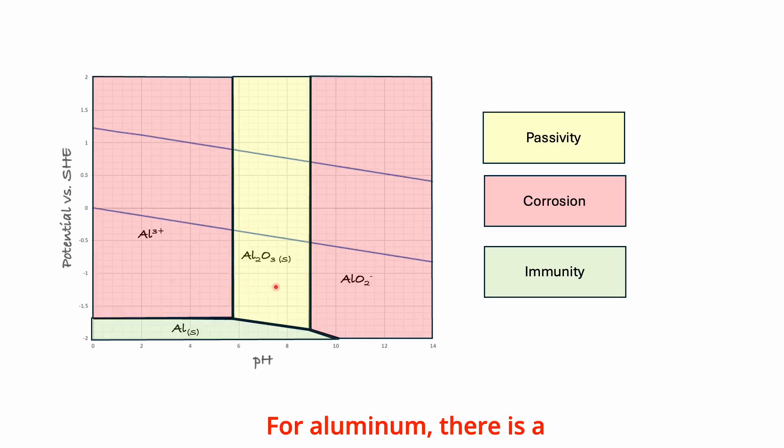For aluminum, there is a consistently high driving force for both hydrogen evolution and oxygen reduction during corrosion across all pH levels, as the oxidation lines for aluminum are substantially lower than those for hydrogen evolution and oxygen reduction.